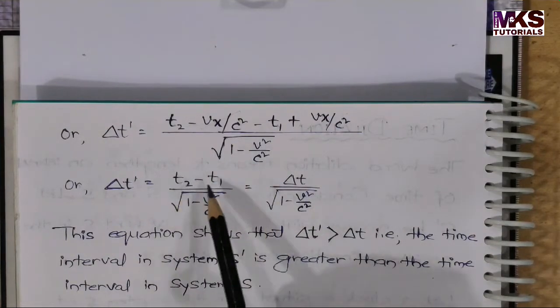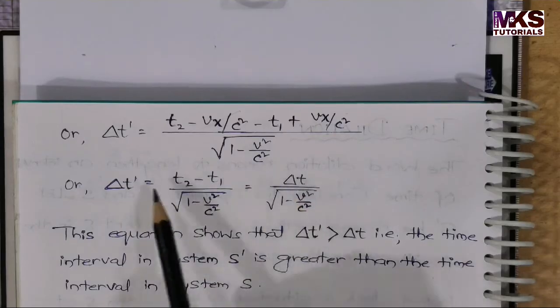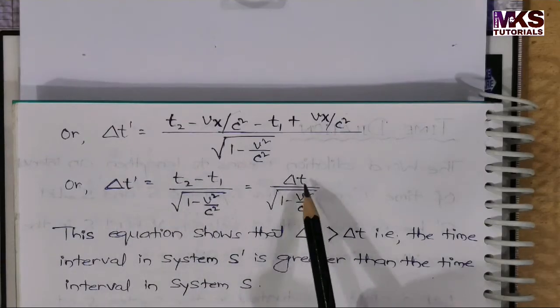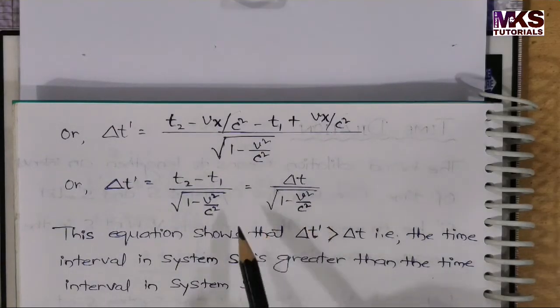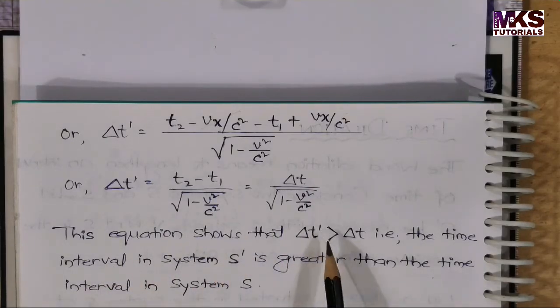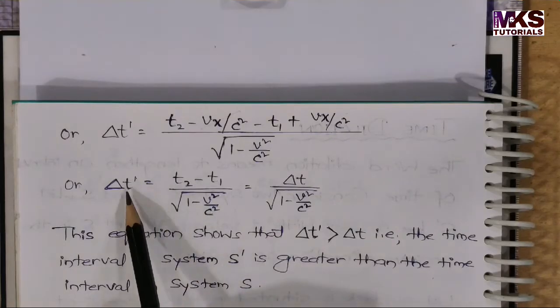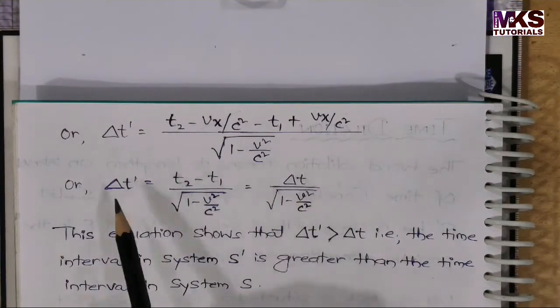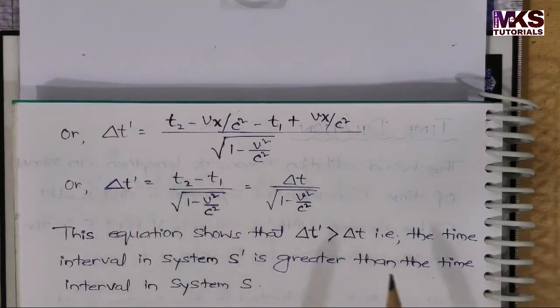That is, the time interval in system S' is greater than the time interval in system S. The value of t' will be greater compared to t, because the time interval in system S' is greater as compared to the system S.